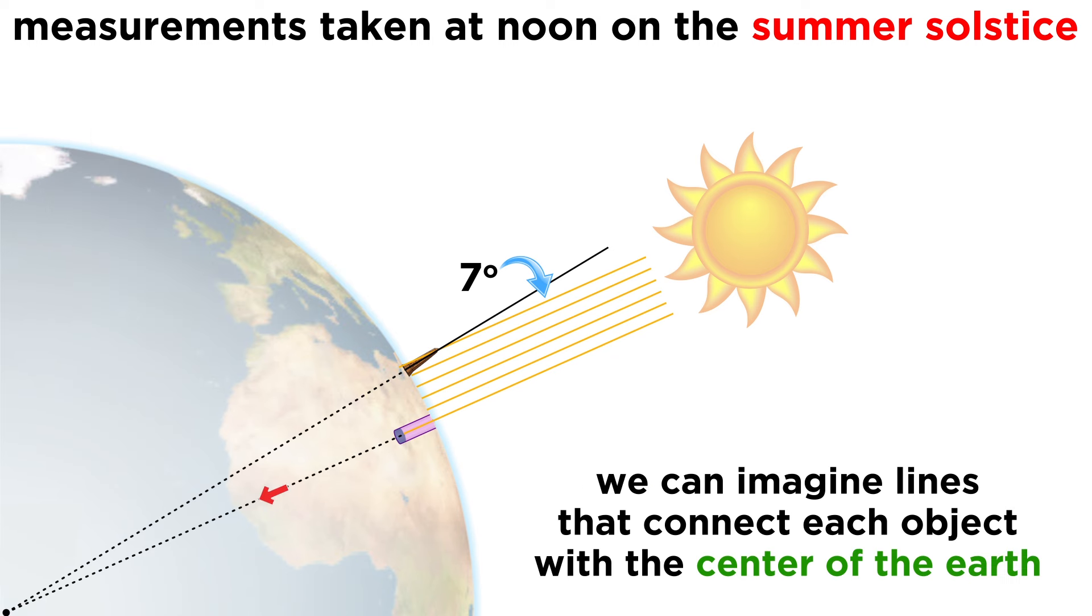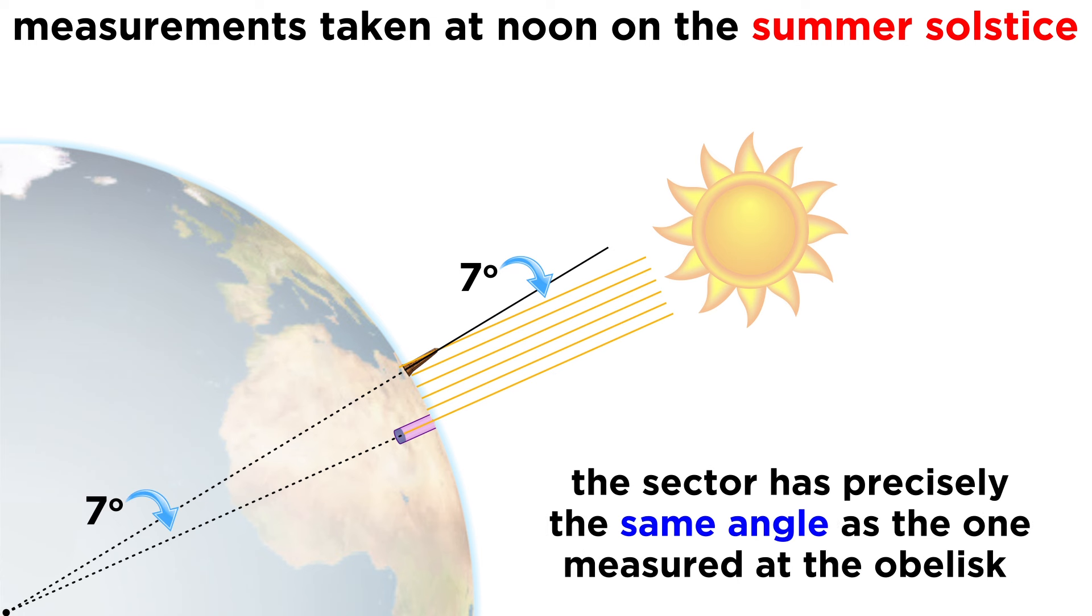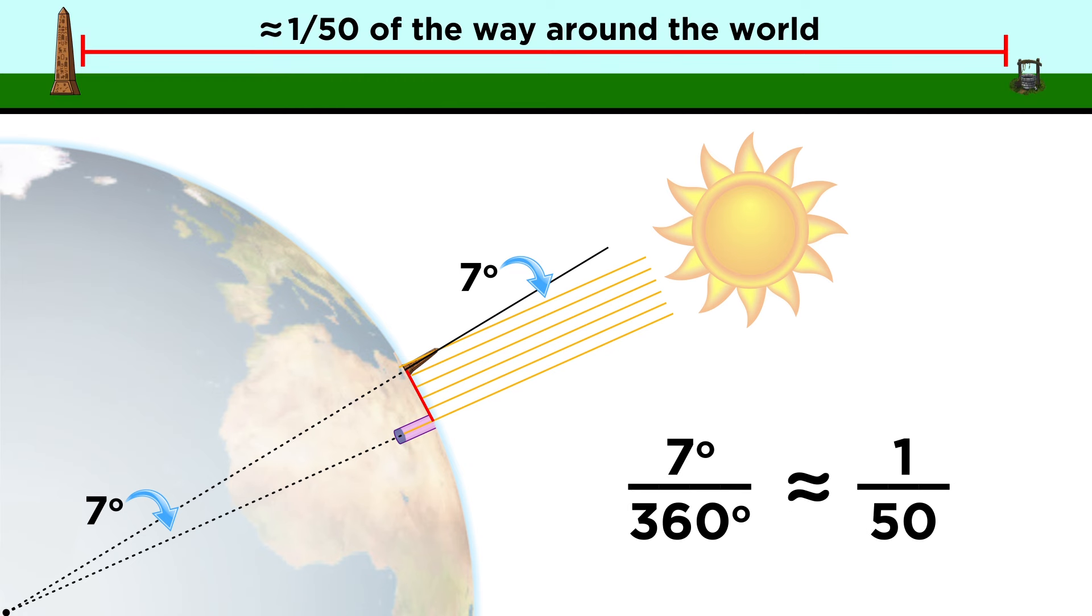Now let's draw a line from the bottom of the well to the center of the earth, and another one back up to the base of the obelisk. By simple geometry, we can see that the angle of this sector is seven degrees, which means that this distance represents a little less than a fiftieth of the way around the world.